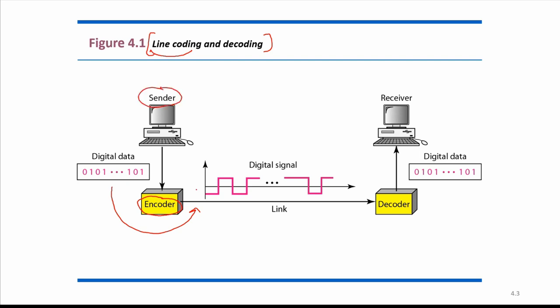Encoding is done at the sender side. At the receiver side, we need to convert the digital signal back into digital data, because through the wires and channel we receive signals. That signal needs to be decoded, so a decoder converts digital signals into digital data. The receiver then understands the original data sent. Encoding is at the sender side; decoding is at the receiver side.